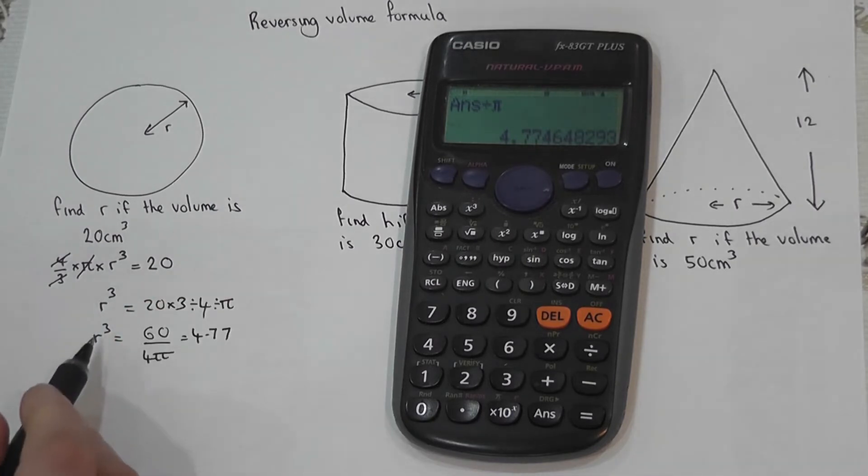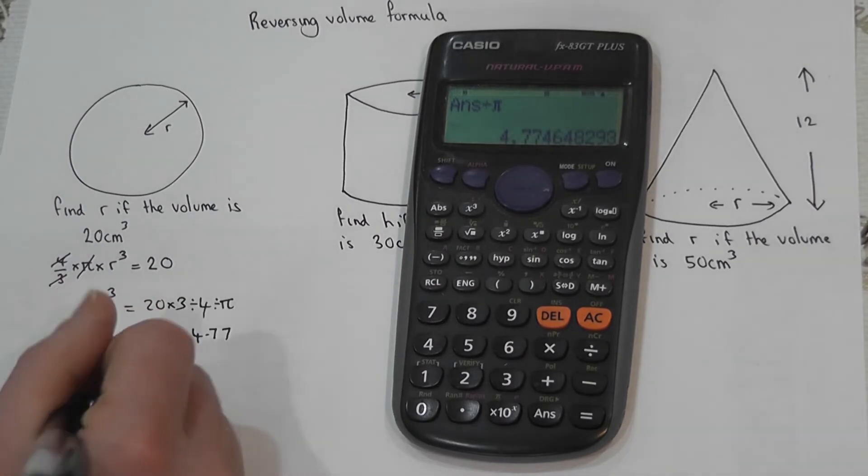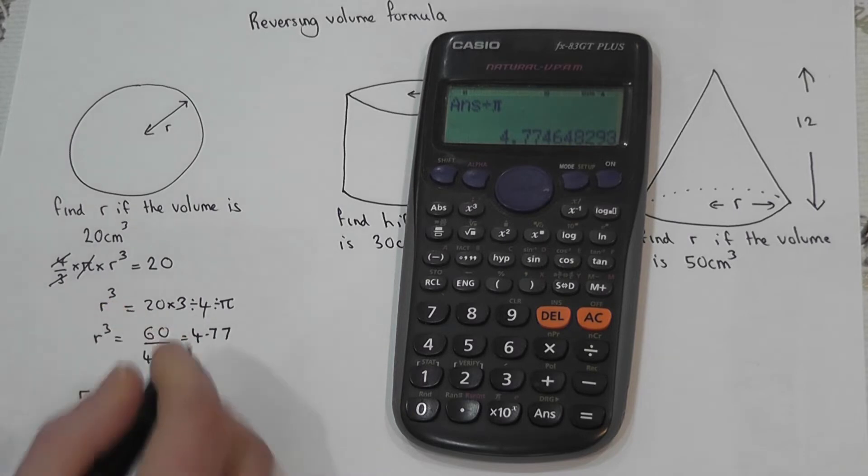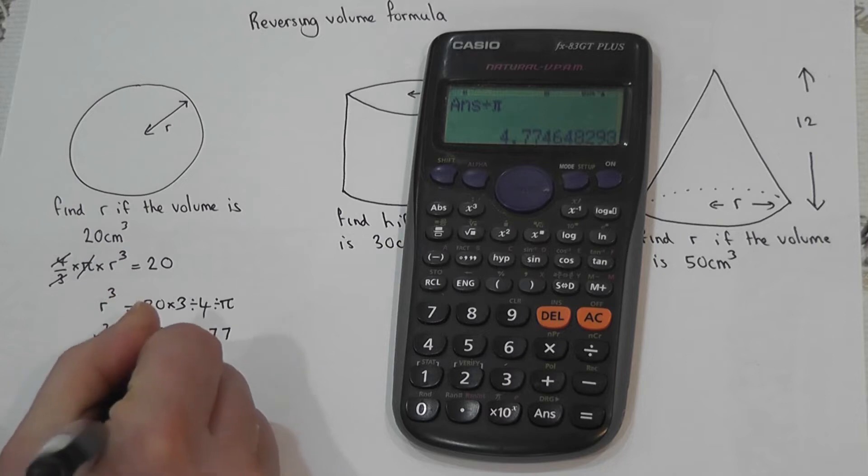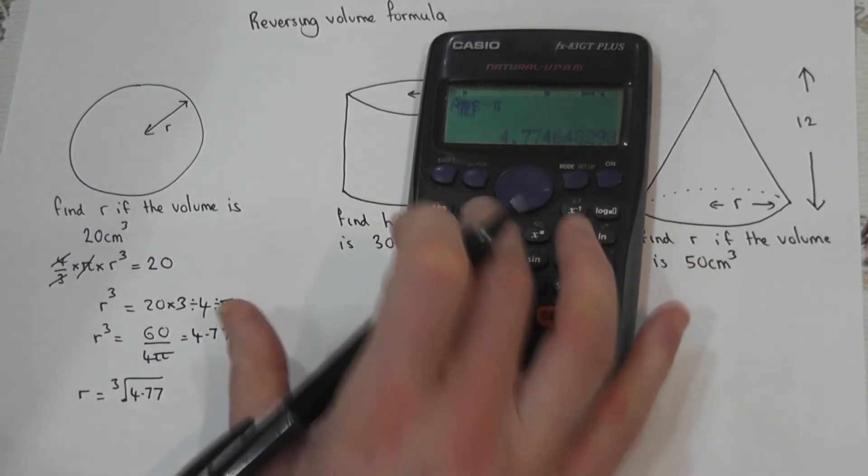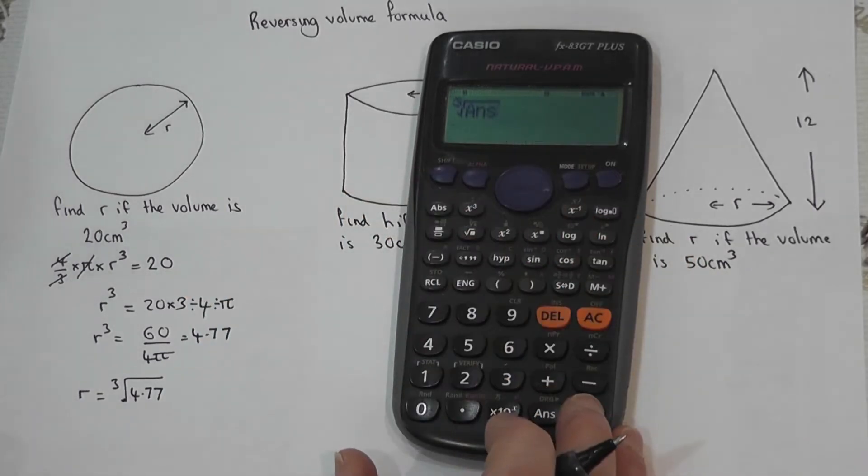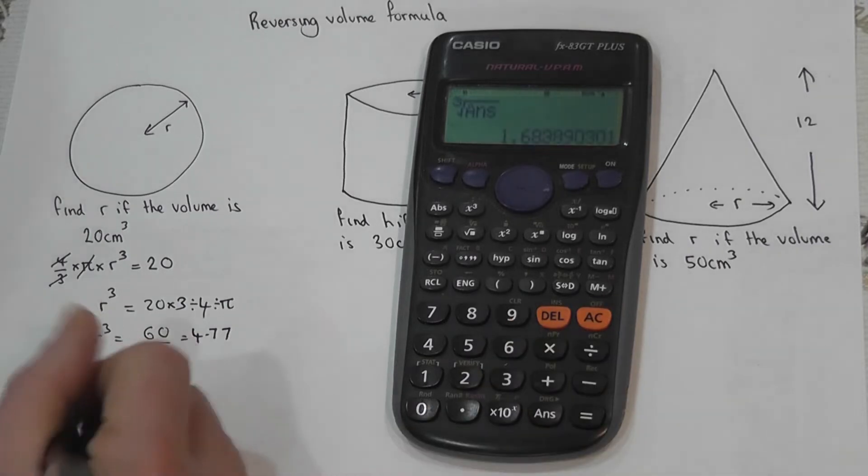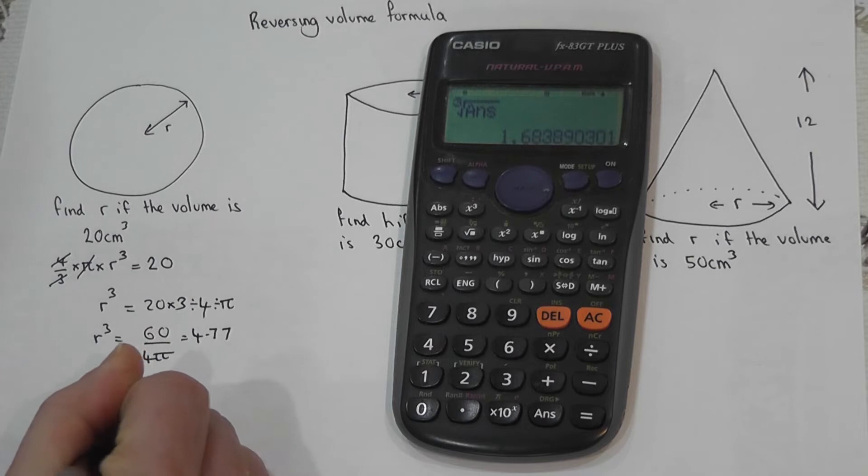And this is r cubed. So to find what r is, I then do the cube root, opposite of cubing. The cube root of this number 4.77. So I'll do the cube root of this answer to make it accurate, and I get the answer that r is 1.68 to 3 significant figures.